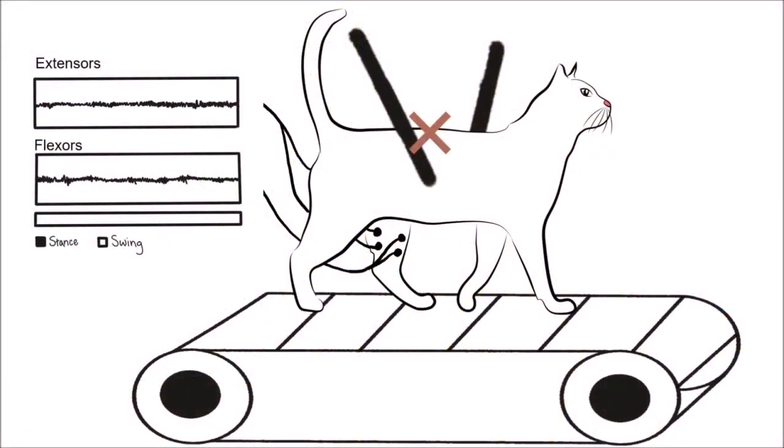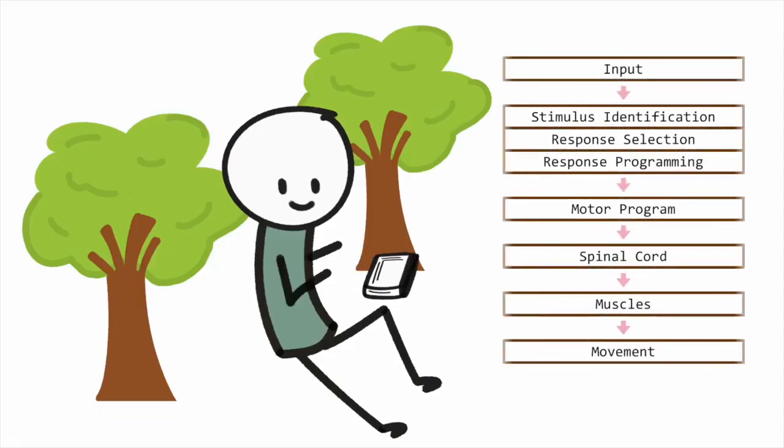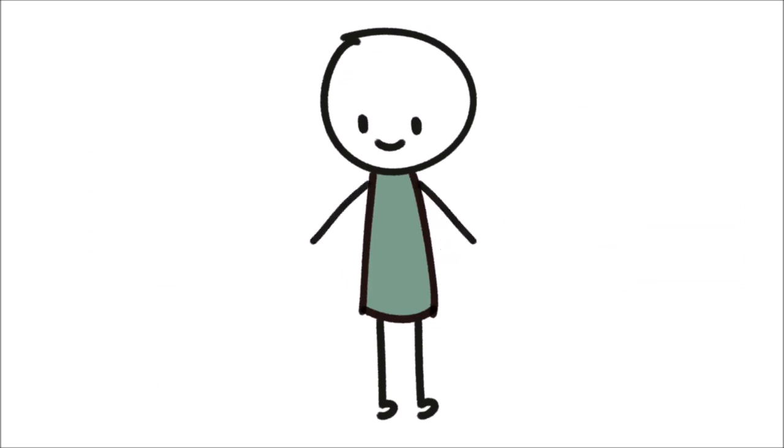In individuals where the spinal cord has been severed completely, gait recovery has been limited. Evidence of motor programs and CPGs reveal how much of our movement is under unconscious control, thus solving the degrees of freedom problem.